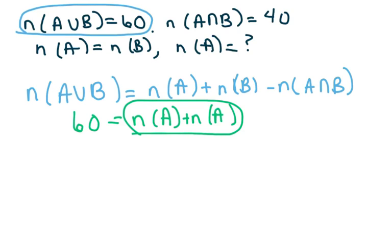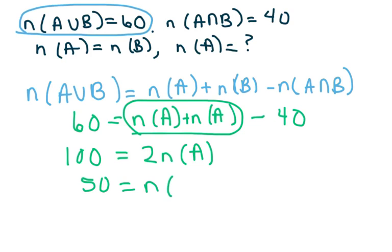Minus my 40. So I get 100 equals 2 times the number in A, and so 50 equals the number in set A.